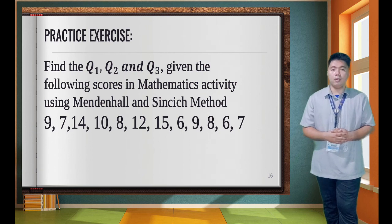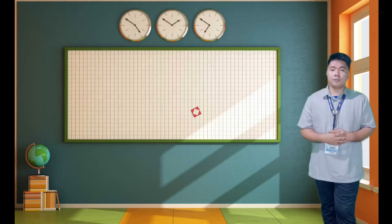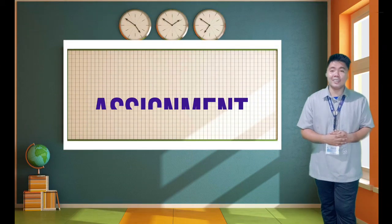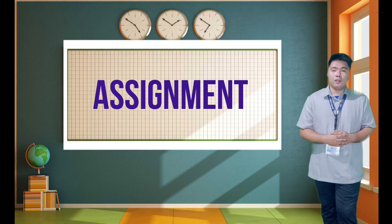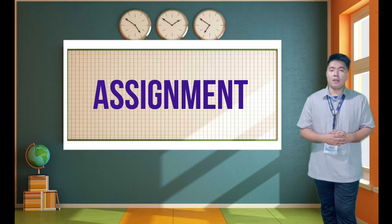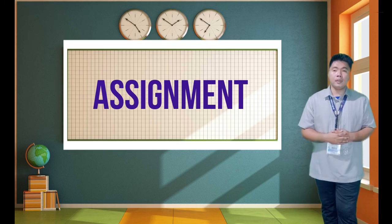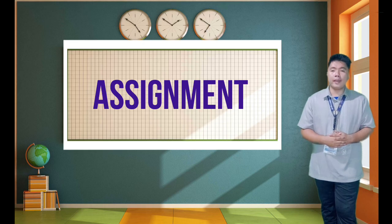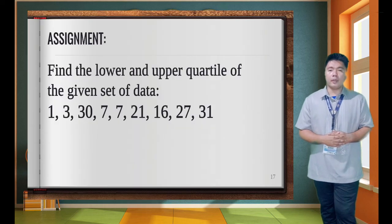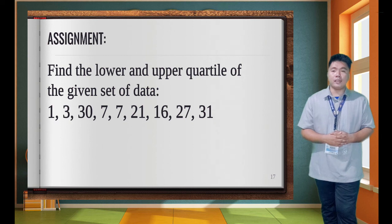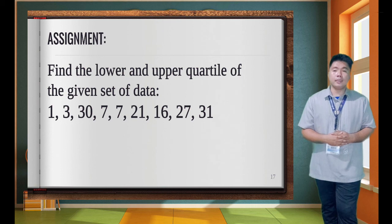That is your practice exercise for today. For your assignment, write on a full sheet of paper and find the lower and upper quartile of the given set of data: 1, 3, 37, 7, 21, 16, 27, and 31.